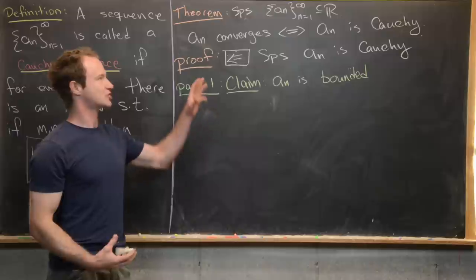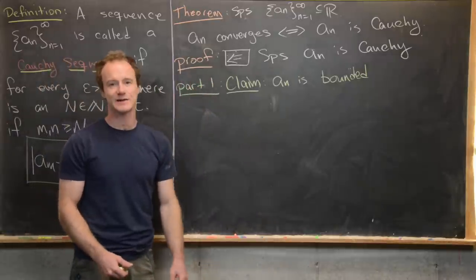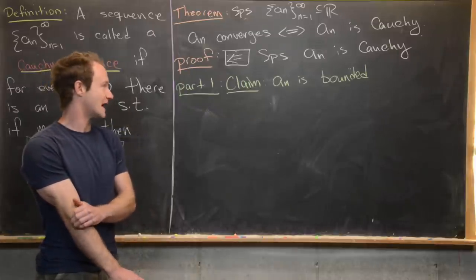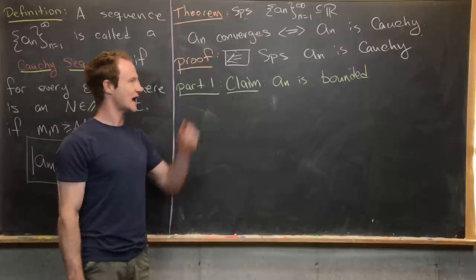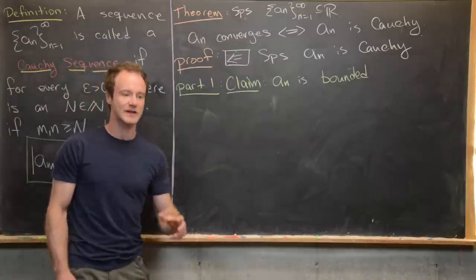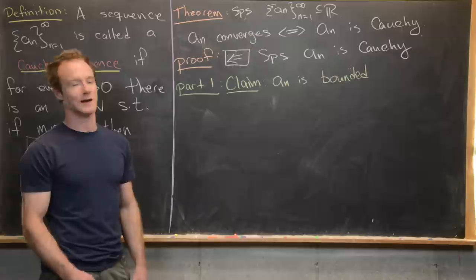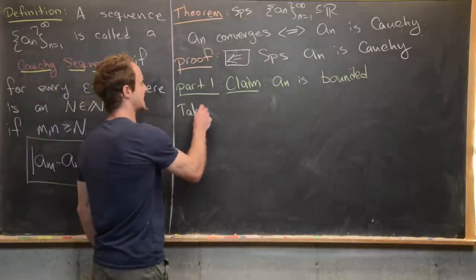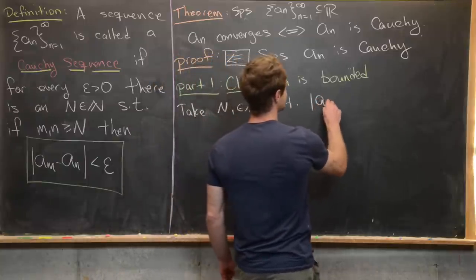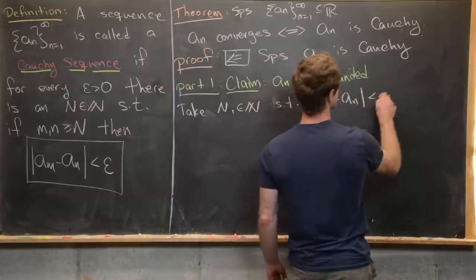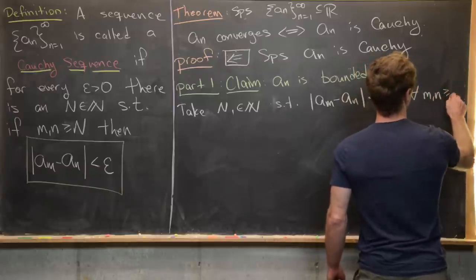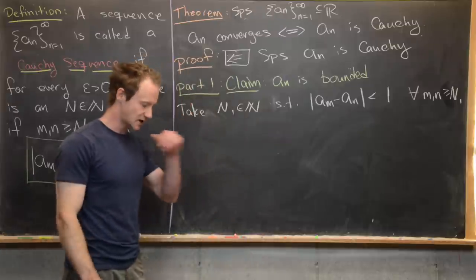Now for the reverse direction: we suppose a_n is a Cauchy sequence and show it is convergent. This requires two steps. The first step is to claim that a_n is in fact a bounded sequence. We take N₁ to be a natural number such that |a_m - a_n| < 1 for all m and n ≥ N₁.